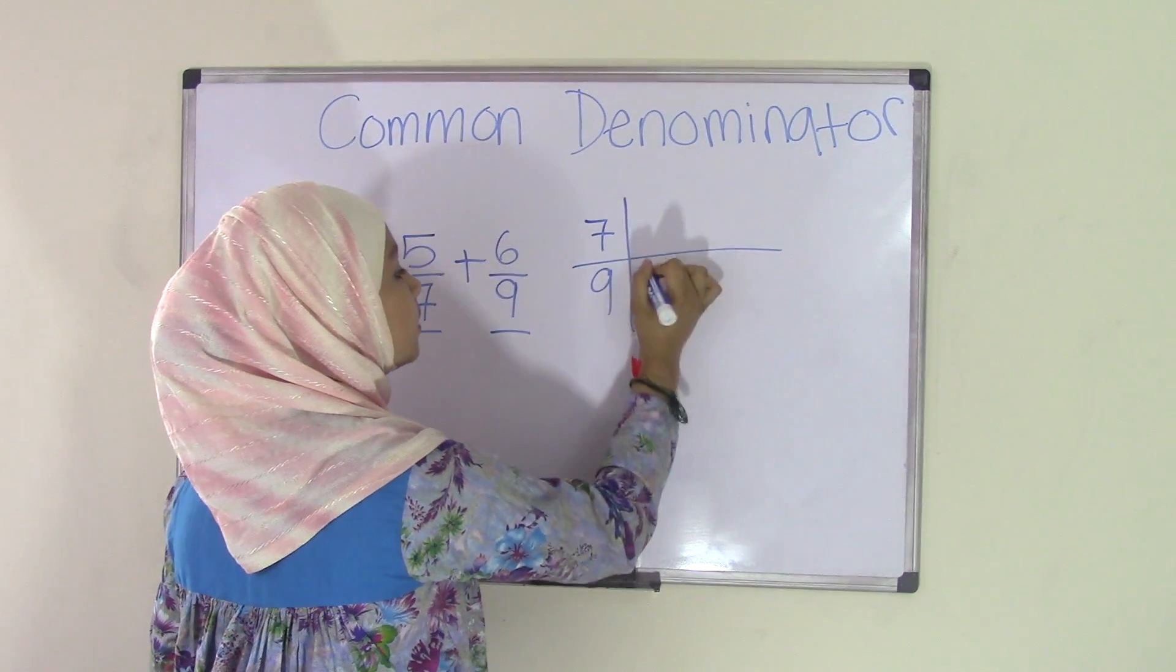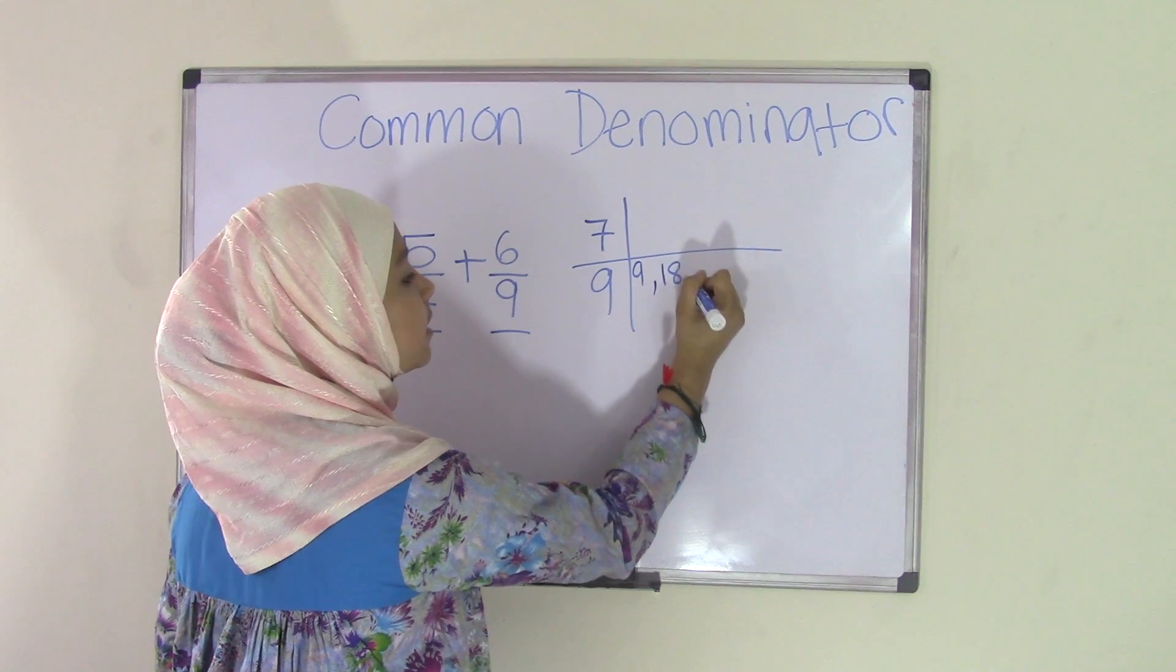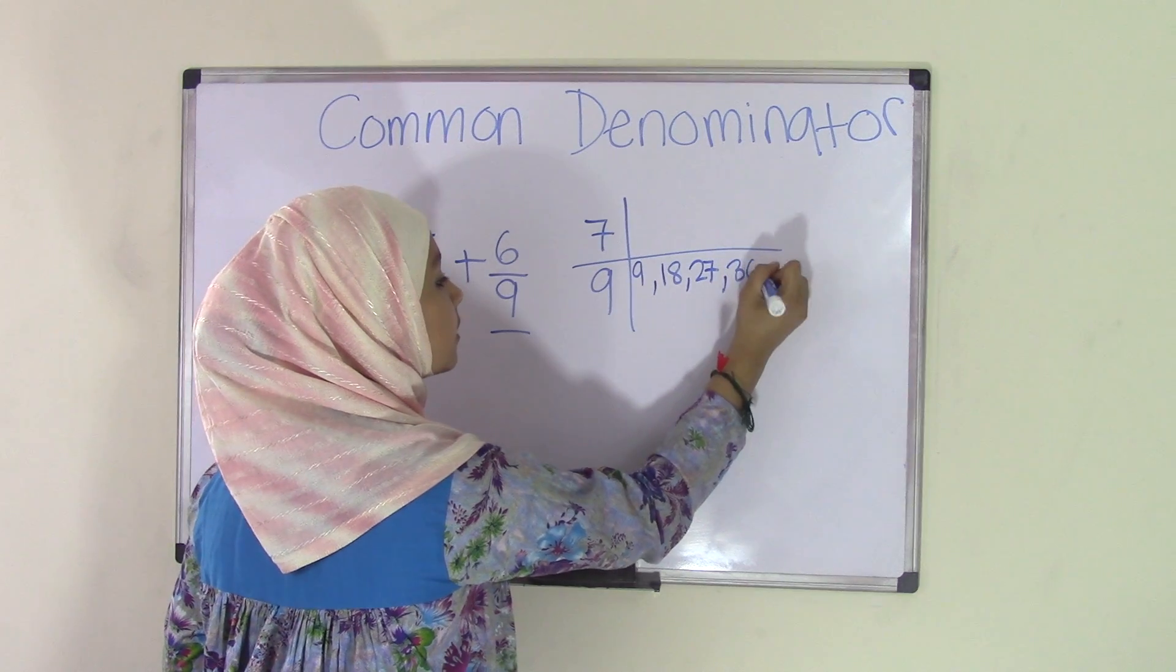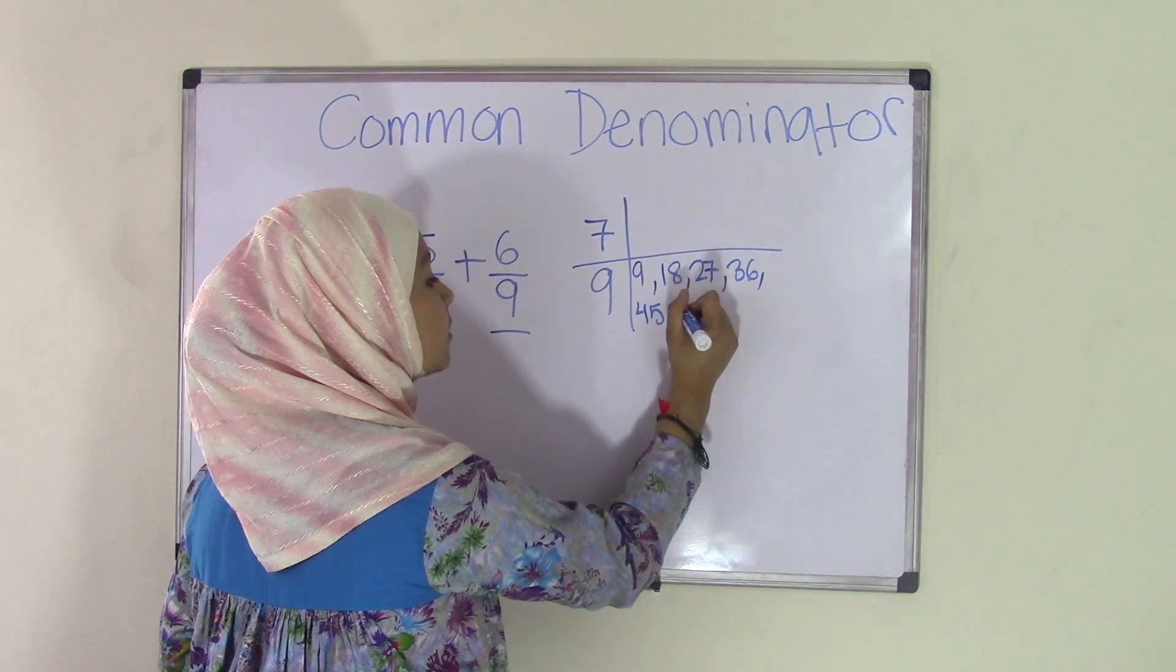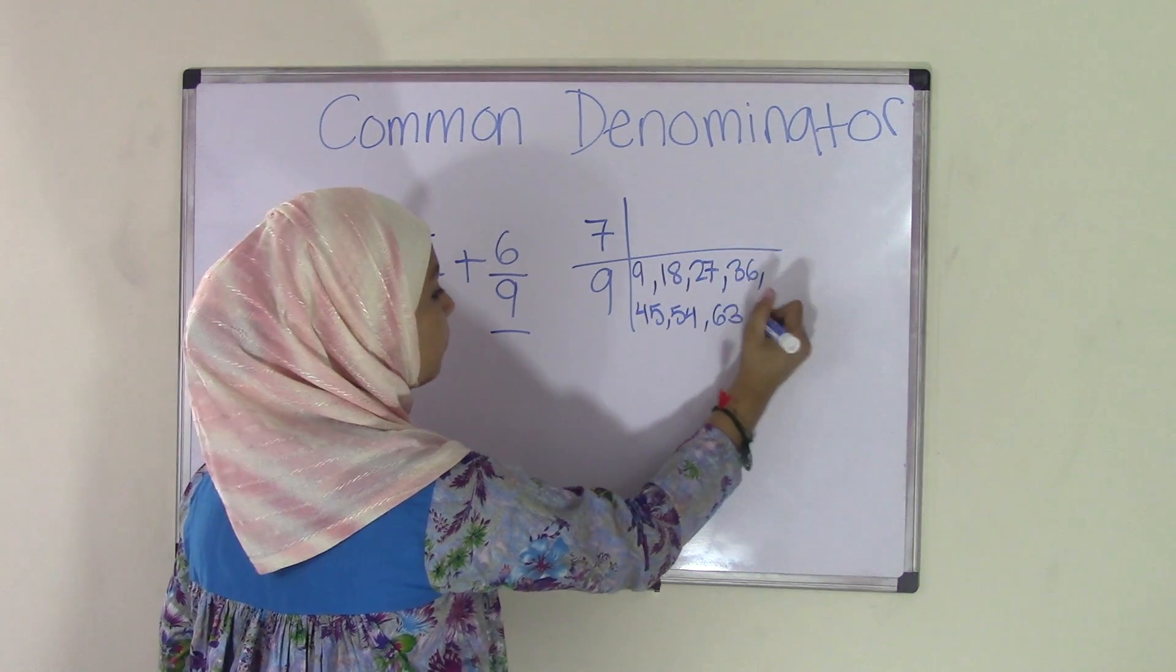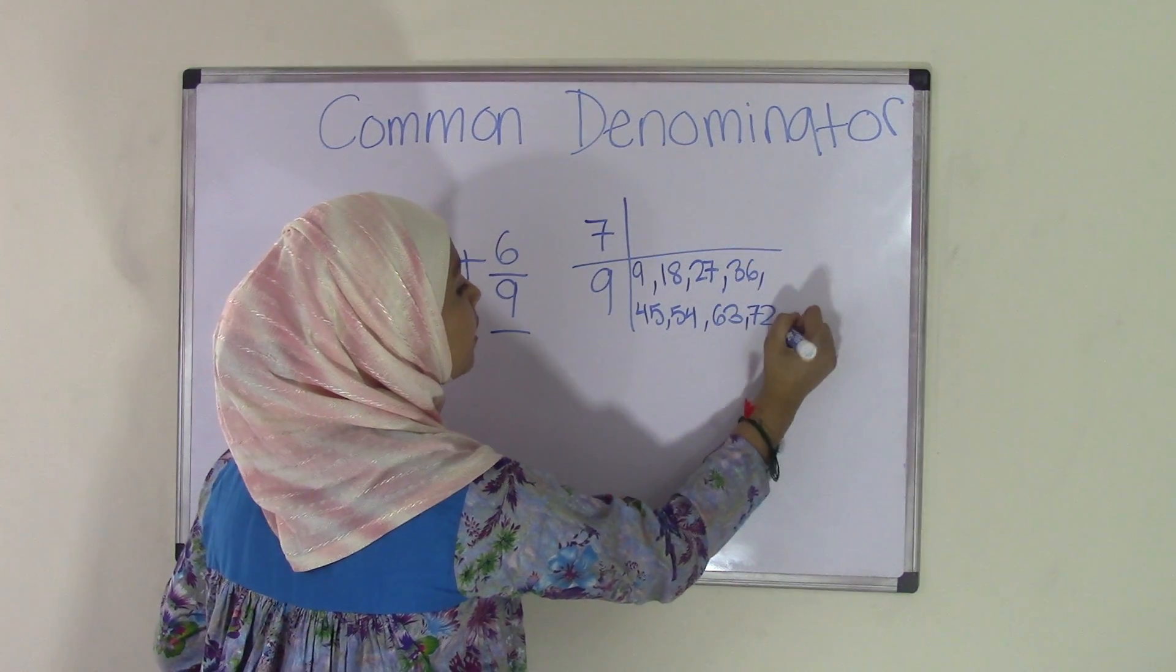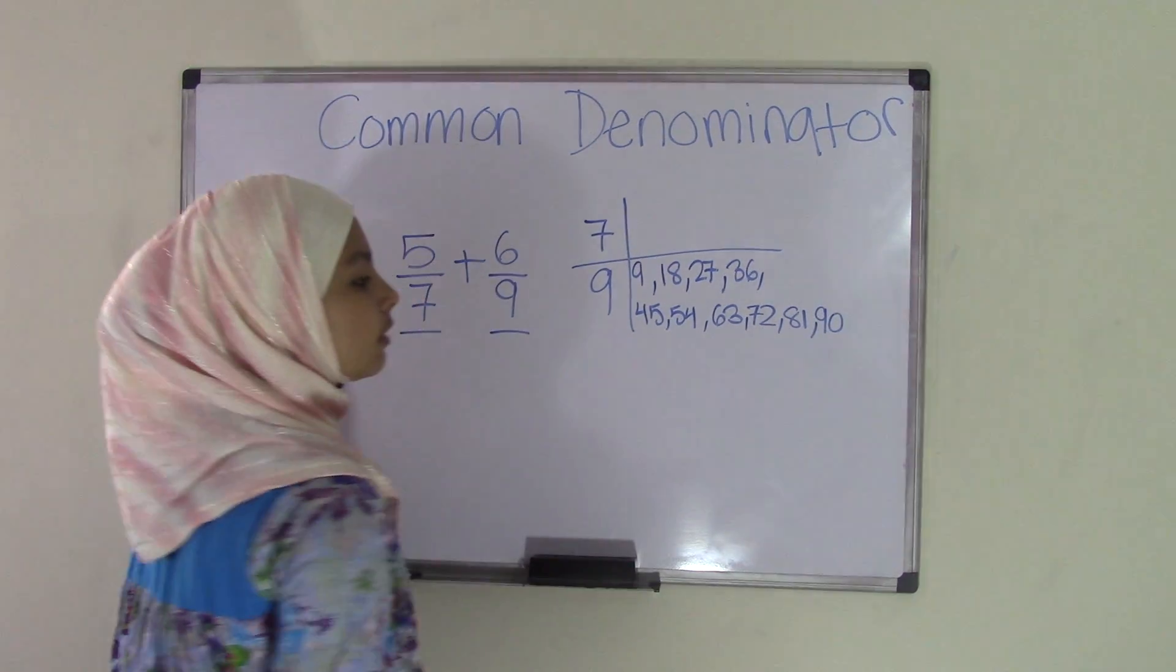So let's start with 9. 9 times 1 is 9, 9 times 2 is 18, 9 times 3 is 27, 9 times 4 is 36, 9 times 5 is 45, 9 times 6 is 54, 9 times 7 is 63, 9 times 8 is 72, 9 times 9 is 81, and 9 times 10 is 90. So I've listed them 10 times.